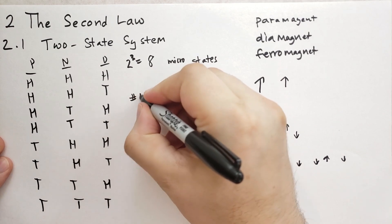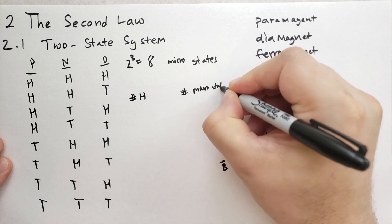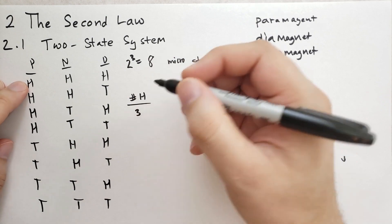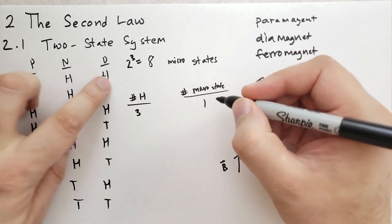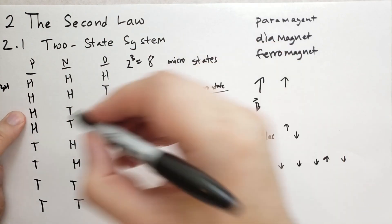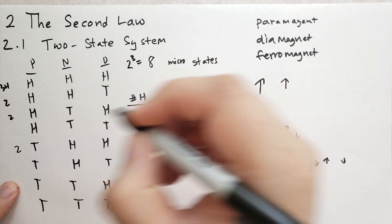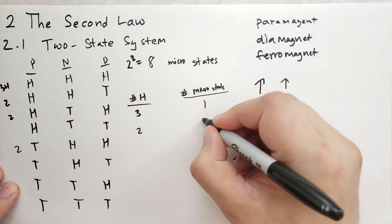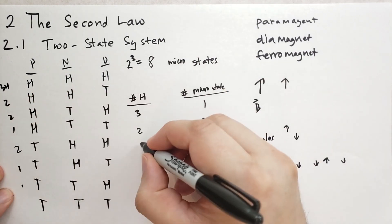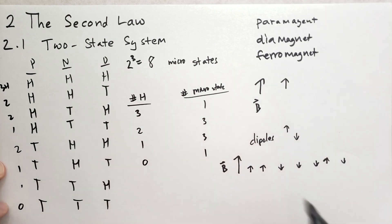Another way we can look at this is we can count the number of heads. And then we can count the number of microstates. So there's exactly one microstate that has three heads. This one right here. So this one has three heads. This one has two heads and two heads. So this one has two heads and two heads. This one has two heads. And so we have three possible ways to get two heads. And then we have one, two, three possible ways to get one head. And then there's exactly one way to get zero heads.